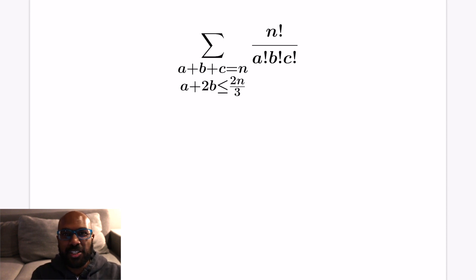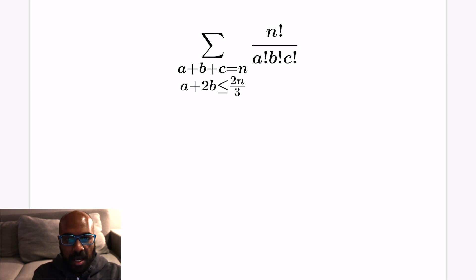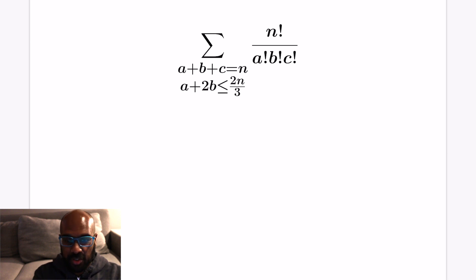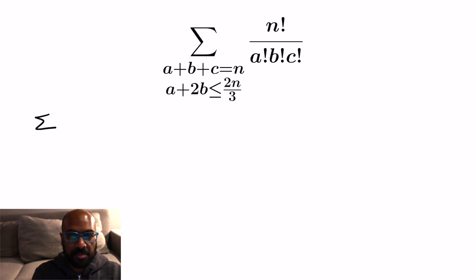I was doing research with an undergraduate student doing a senior thesis with me, and in one of the research papers this interesting sum showed up, and the question was how big is this asymptotically? It's a sum over all non-negative integers a, b, c where a plus b plus c equals n, and the quantity we're summing is n factorial over a factorial b factorial c factorial, with the condition that a plus 2b is less than or equal to 2n over 3. This seems random, but I want to take some time and look at abbreviated versions of this to get a sense of what's going on.